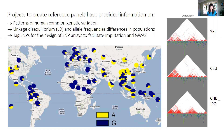Reference panels are databases that contain information about genotyped haplotypes in a set of individuals. A haplotype is a particular combination of alleles along a chromosome that tend to be inherited together. Reference panels are an important resource of sequence variation and are very useful for processes like imputation. They contain a lot of information about differences in linkage disequilibrium and allele frequencies across populations.